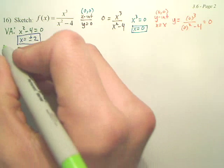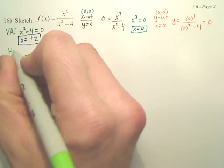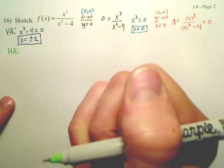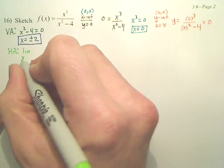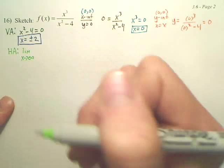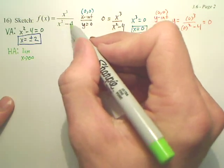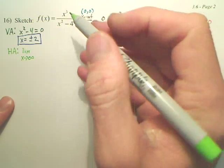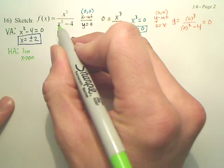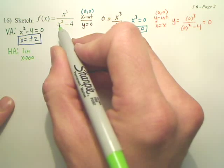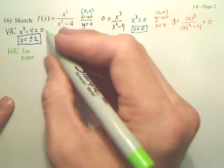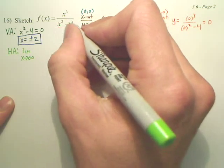Next, we want to do horizontal asymptotes. That we do by taking the limit as x approaches infinity. And for this particular problem, we're going to divide by the highest degree in the denominator. So the highest degree in this denominator is x squared. So when you divide everything by x squared,